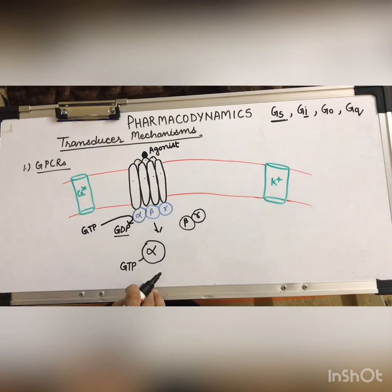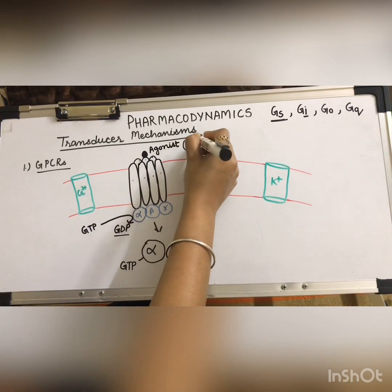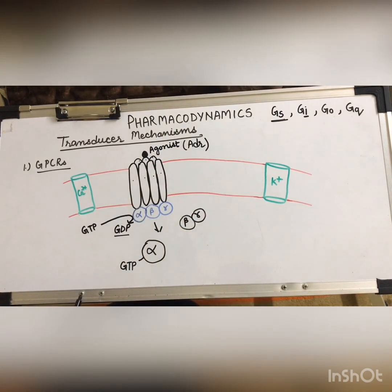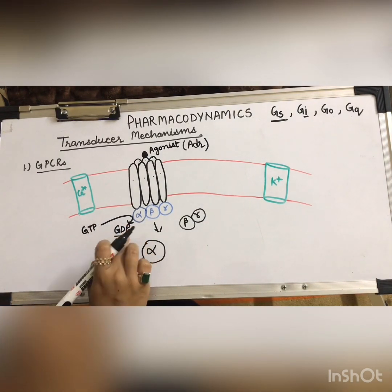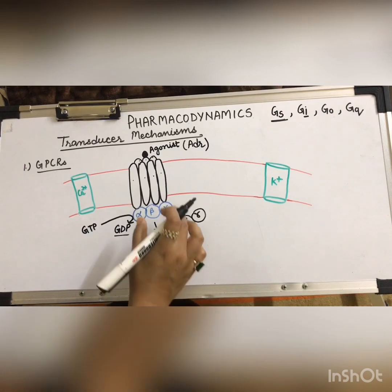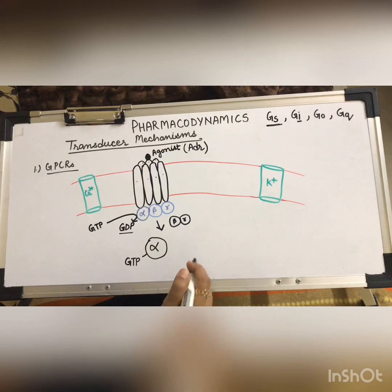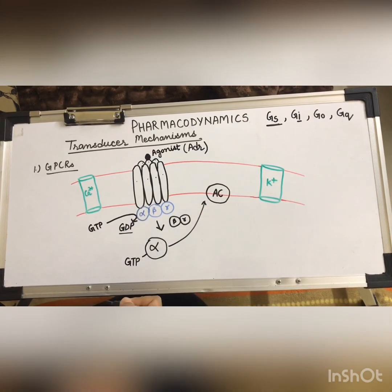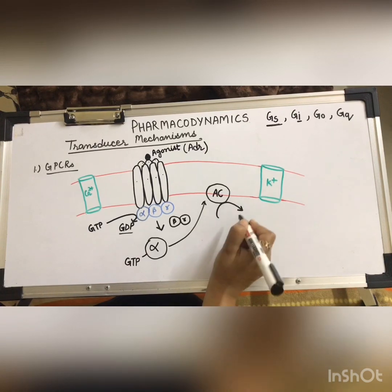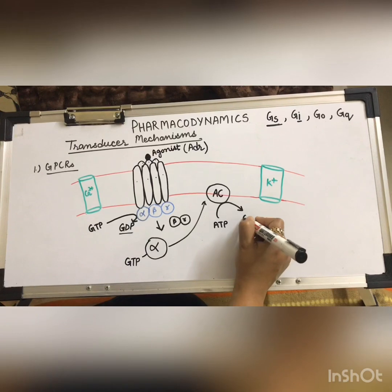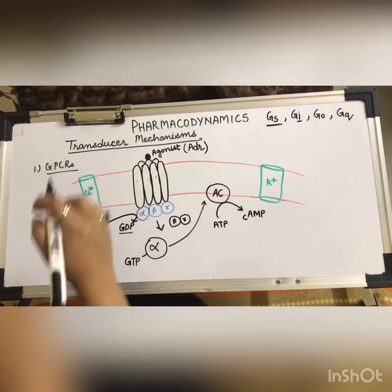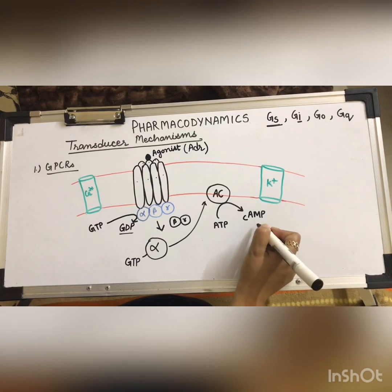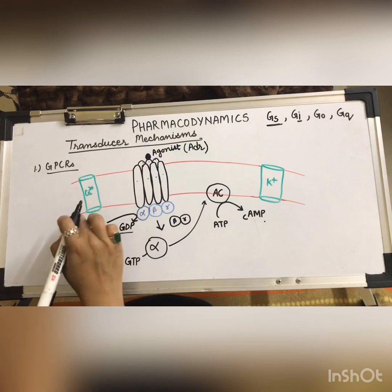Let us consider Gs proteins with adrenaline as the agonist. When adrenaline binds to the GPCRs, GDP is replaced by GTP and the trimer dissociates. The activated alpha subunit goes and affects the effector, which in this case is adenylyl cyclase. When adenylyl cyclase is activated, it starts converting ATP into cyclic AMP — that is why this pathway is also known as the cyclic AMP pathway.